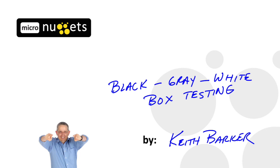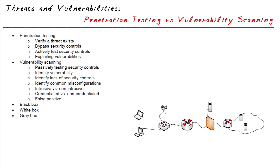In this video, you and I get to chat about black, gray, and white box testing in the context of vulnerability scanning and penetration testing. When doing a test against a system, which may be against a network as a whole, or maybe against a specific application running on a server, we have different categories of testing that we could do.